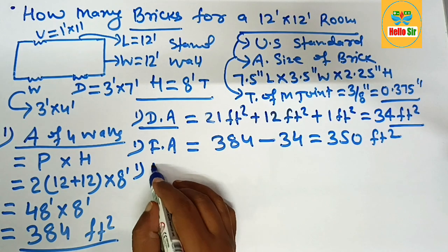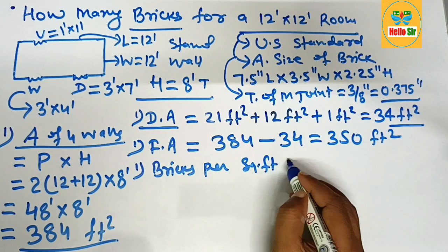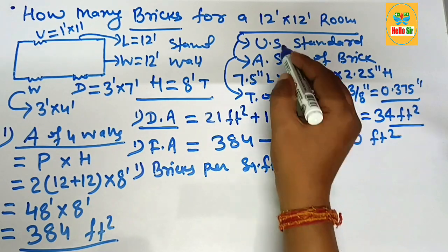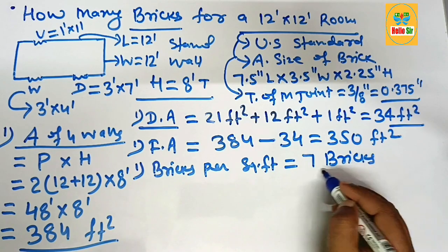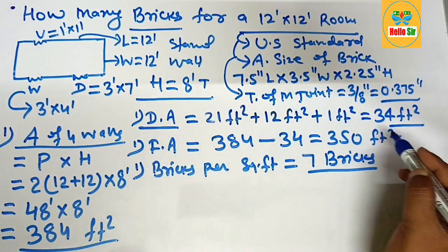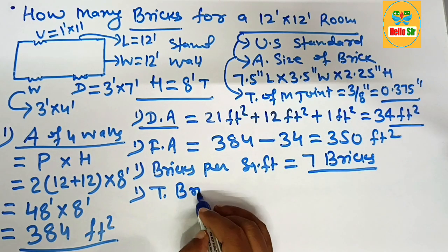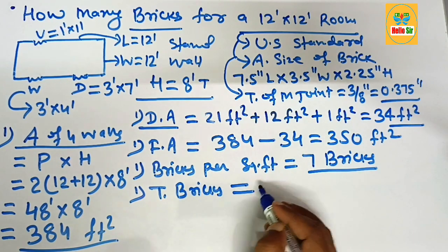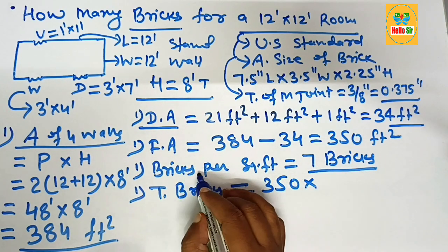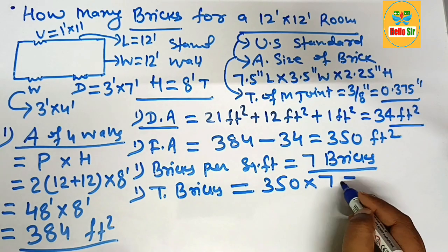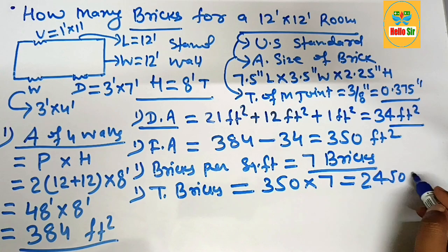The formula used is bricks per square foot. As per United States practice, it is about 7 bricks per square foot. You have a total of 350 square feet, so the total bricks required equals 350 multiplied by 7 bricks per square foot, which comes to 2450 bricks.